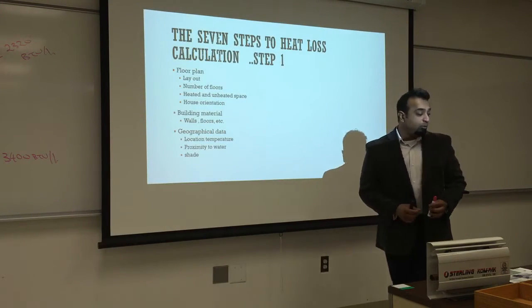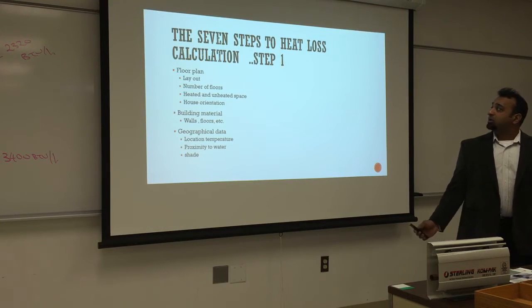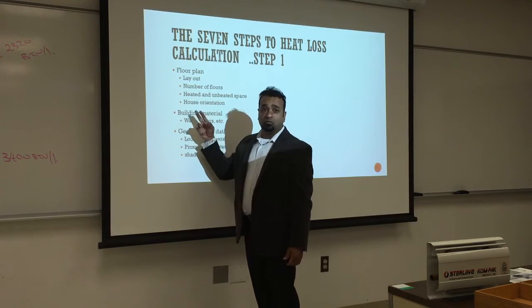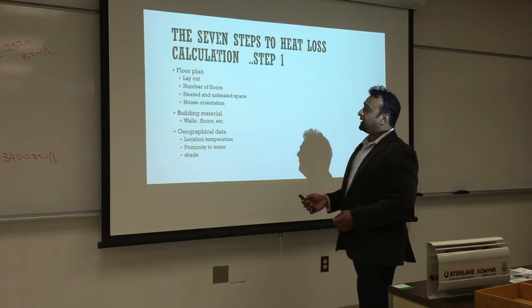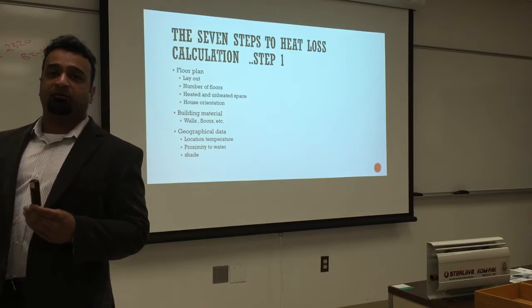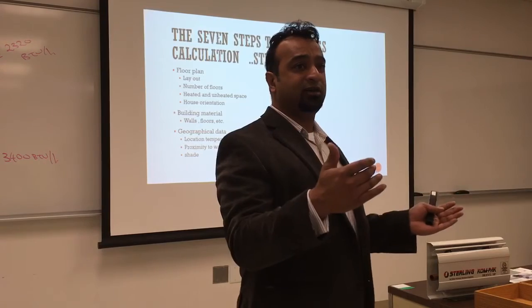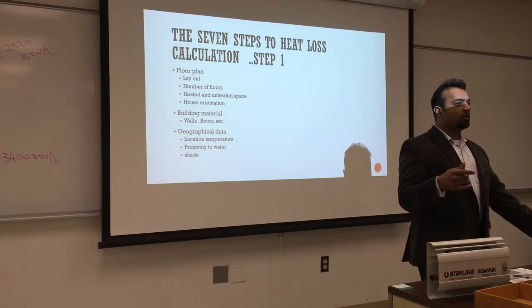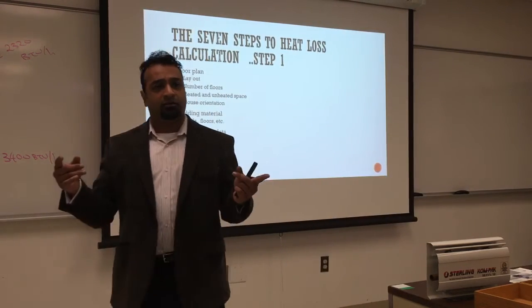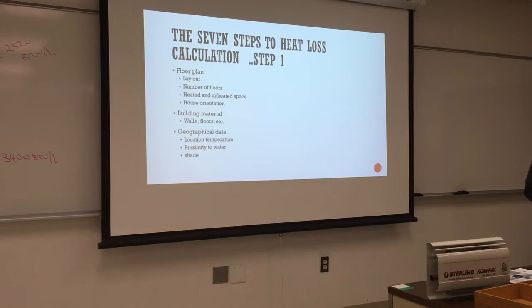Step one: get the floor plan. We did this last semester, but I'll go through it again carefully. Make sure you have the layout, the number of floors, and whether each is heated, unheated, or seasonally heated. Get the house orientation—which part faces south, which faces north. That's important for the windows. You want windows facing east and north, and shade on the south and west, because those always get the most sun—very important for cooling load.